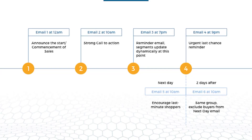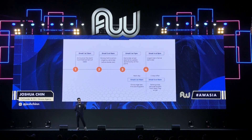Email 3 comes out at the end of the day as a reminder email. Segments update automatically at this point, so you can exclude buyers from the first two emails. Email 4 goes out at 9 p.m. as an urgent last-chance reminder — and here's the trick: use a text-based email. A text-based email for reminder number 4 will most likely end up in the primary tab, especially if you keep it conversational and not too salesy.